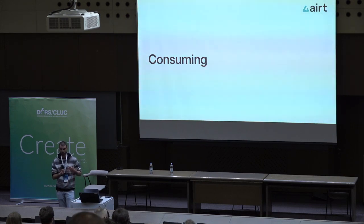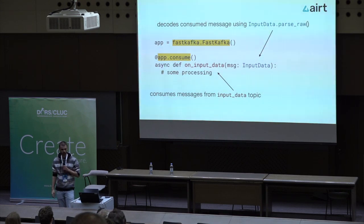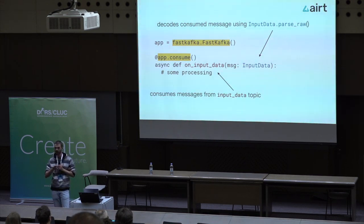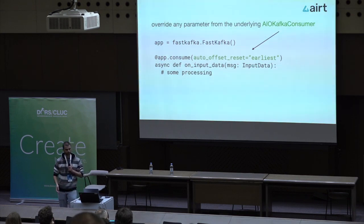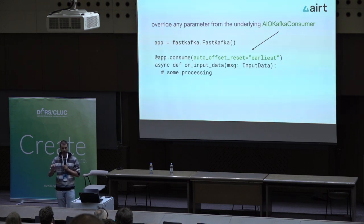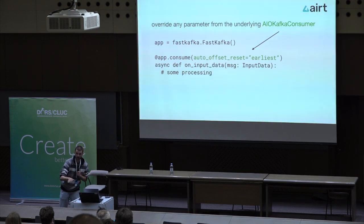Let's take a look at how we implemented consuming. To consume messages from Kafka, you just define your app and write your functions — on input data you get messages in JSON format, you do some processing, and to connect it to Kafka you just use the app.consume decorator, and it takes care of everything in the background, rerouting your function to start consuming from Kafka. If you want to override any AIO-Kafka parameters, we decided not to hide anything — so you can customize things like whether to read from the beginning of the queue or from when you connected.